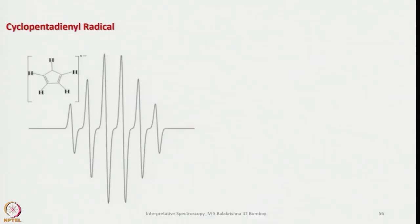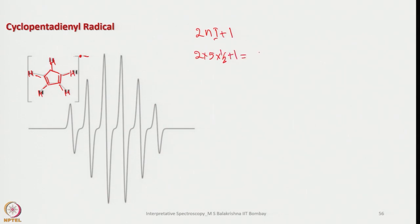Now let us look at the cyclopentadienyl anion radical. This radical is coupled with 5 equivalent hydrogen atoms. Applying the same 2Ni+1 rule, this will show 6 lines.